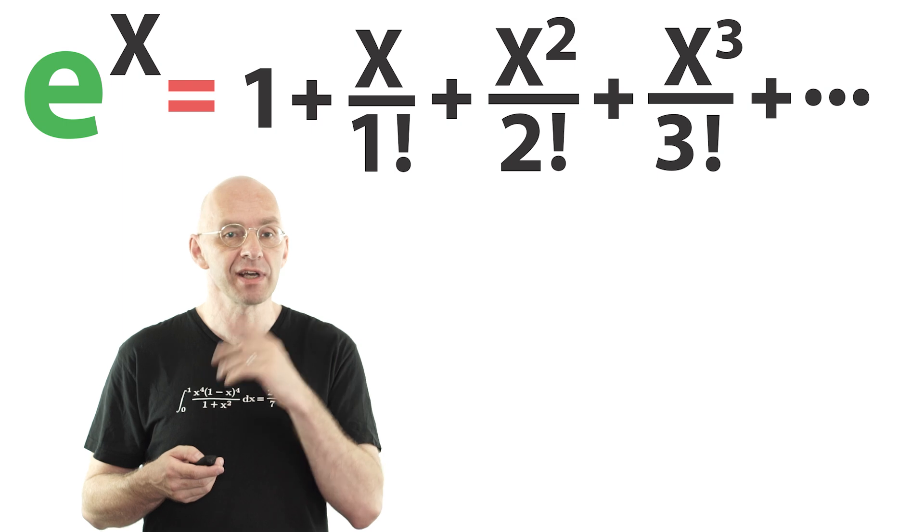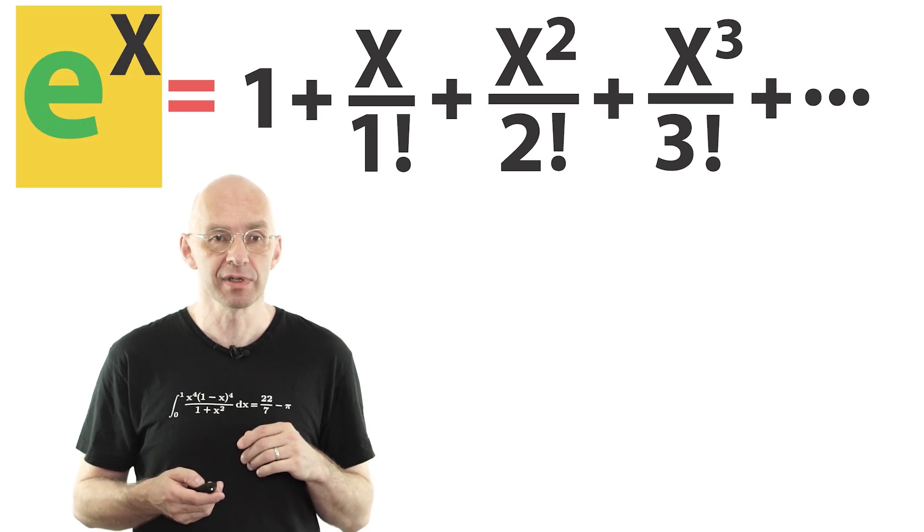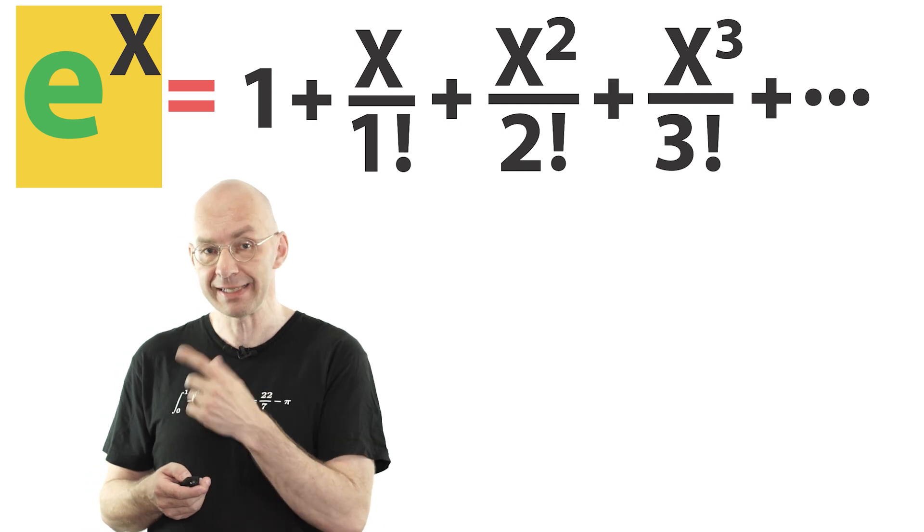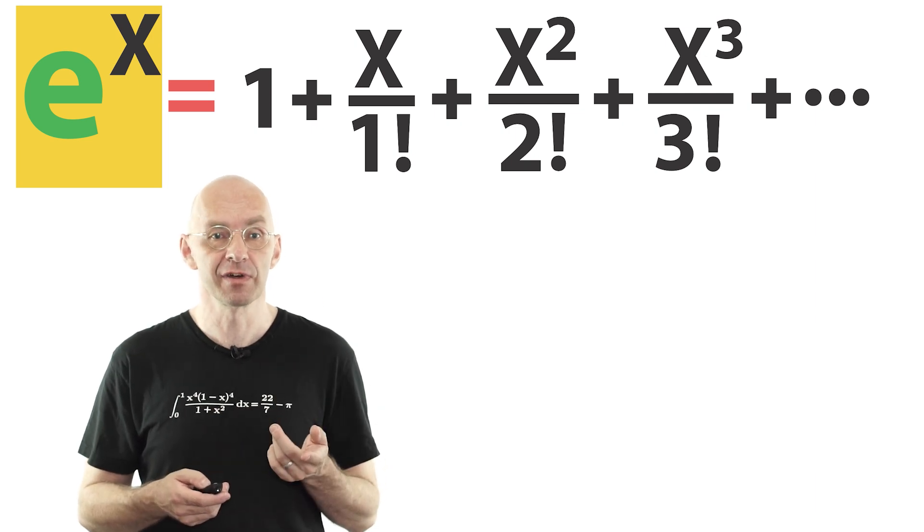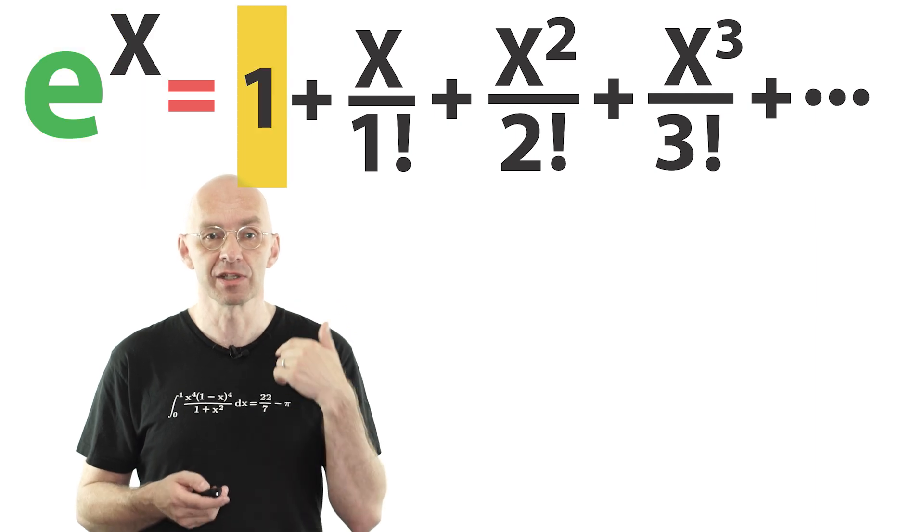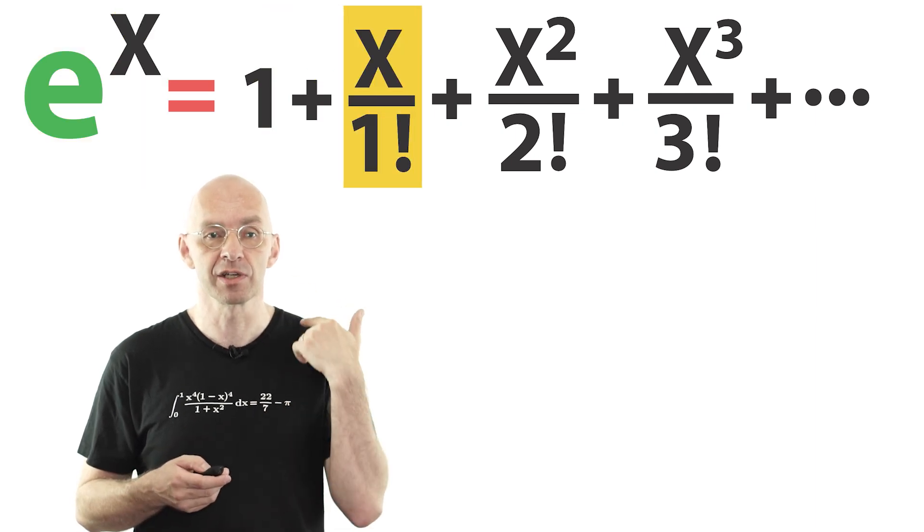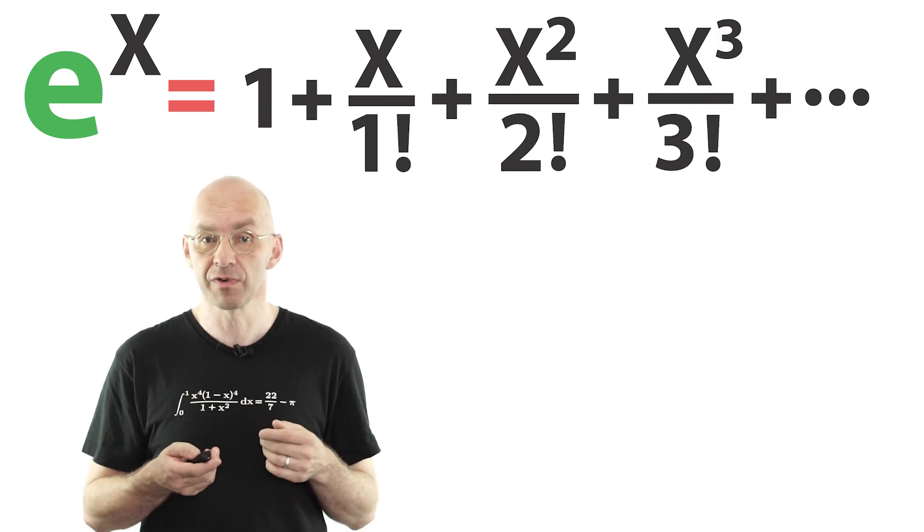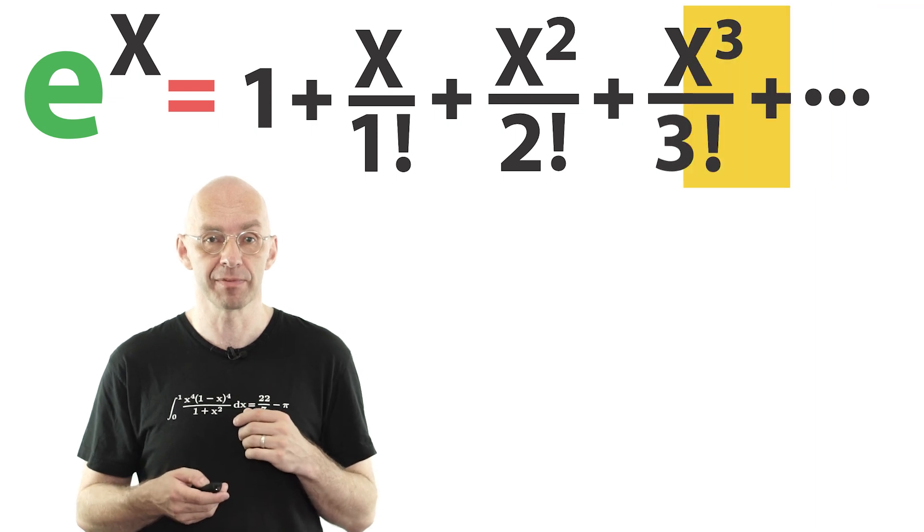We want to convince ourselves that the exponential function is the derivative of itself. Because of this identity, the derivative of the exponential function is just the derivative of 1 plus the derivative of this term, plus the derivative of that term, and so on. So, what's the derivative of x cubed divided by 3 factorial, for example? Let's see.